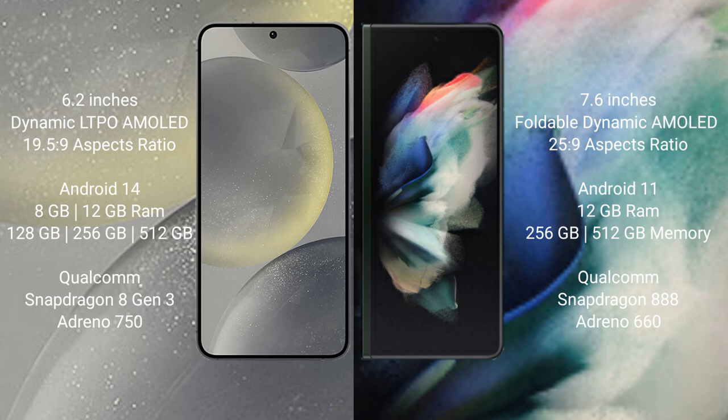Samsung Galaxy Z Fold 3 comes with 12GB RAM and 256GB and 512GB internal storage. It features a Qualcomm Snapdragon 888 processor and GPU Adreno 660.